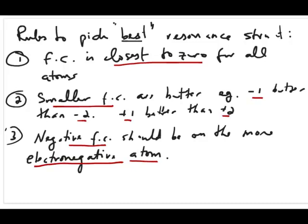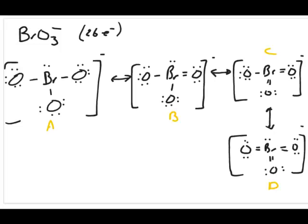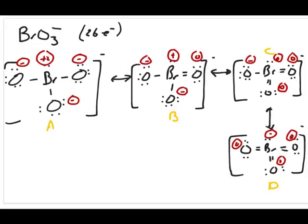Let's do an example. We're going to go back to the bromide ion, BrO3⁻, and draw three or four different resonance structures, then go through the rules to select the best one. In front of us now are four different resonance structures of BrO3⁻. Three of these we already discussed in the previous video — structures A, B, and C — where we drew them and calculated formal charges. I've now added one more, structure D.